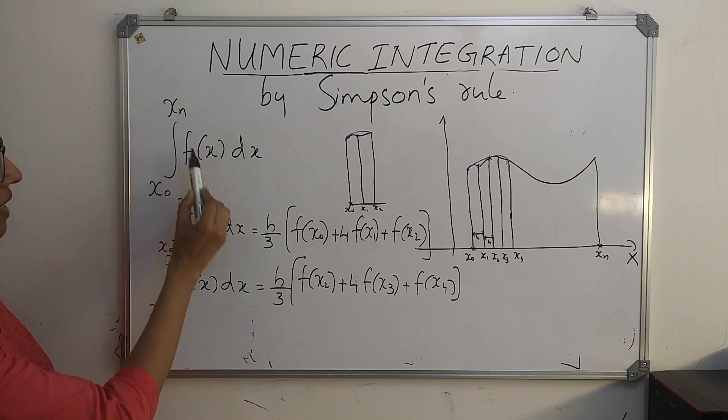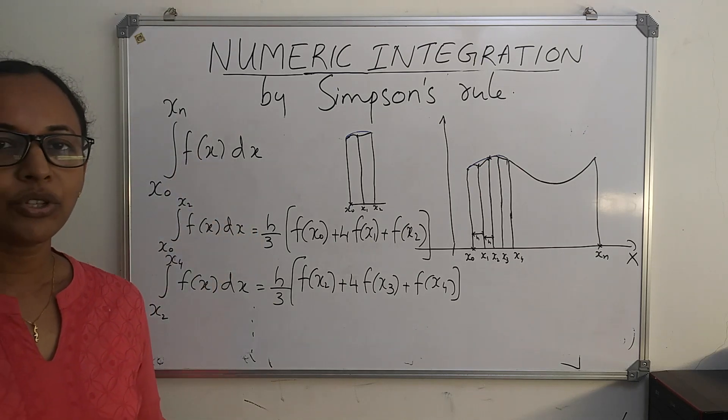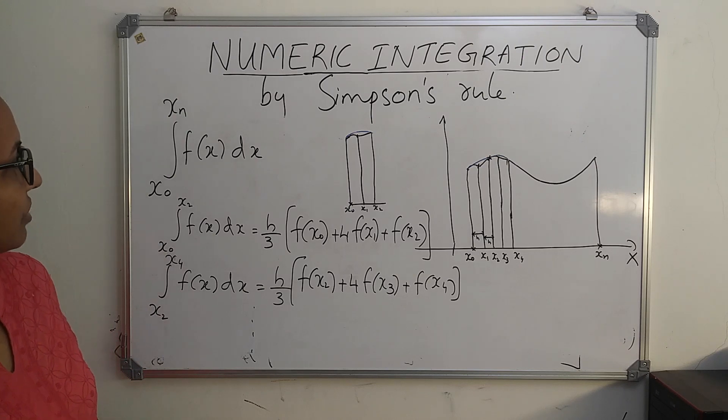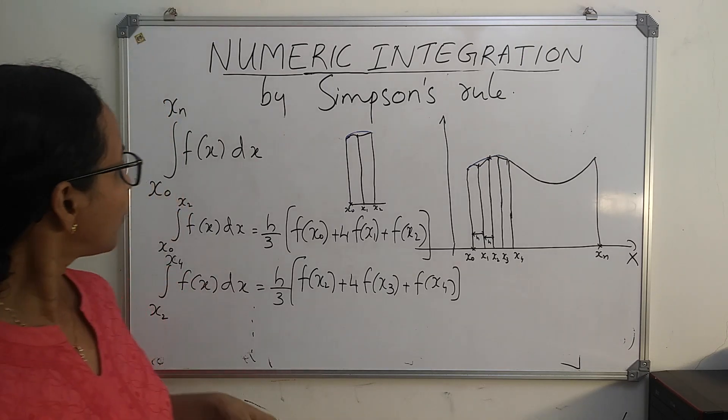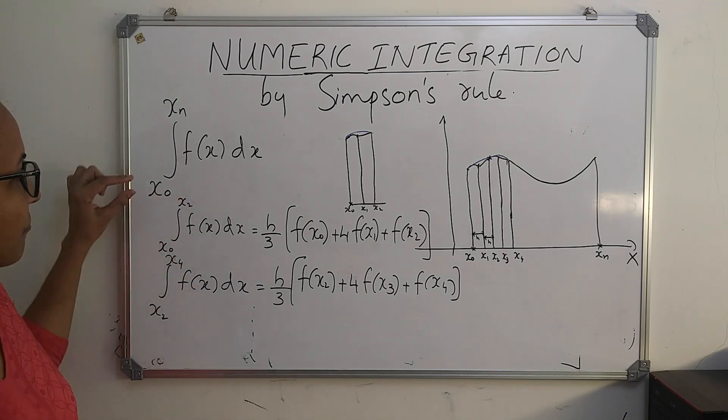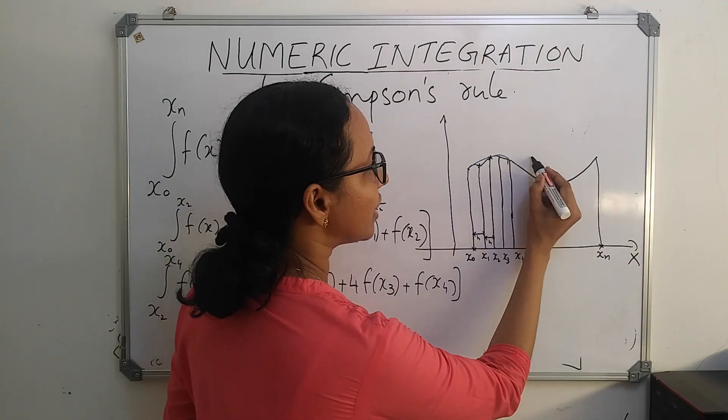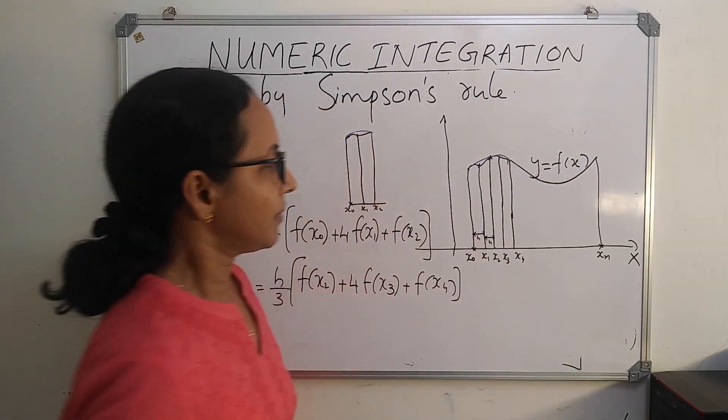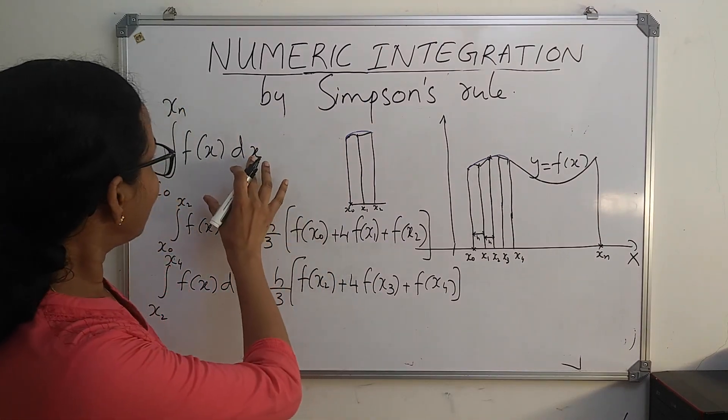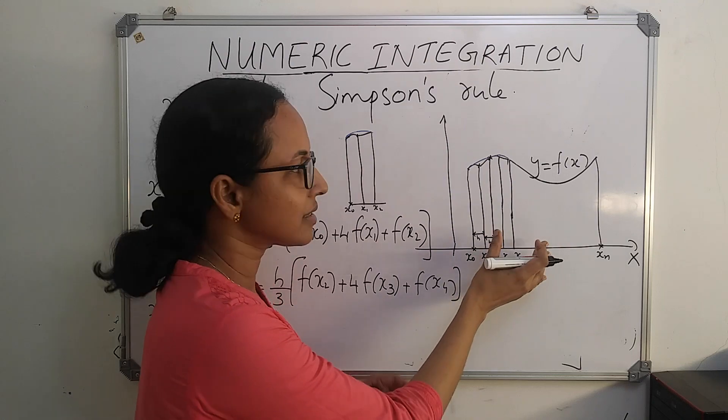Suppose you have to evaluate this definite integral: integral from x0 to xn f(x) dx. And you know that the geometric meaning of this definite integral is area under the curve y equal to f of x from x0 to xn. So let this be the curve y equal to f of x. Therefore, the value of this definite integral is same as the area under this curve.